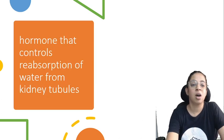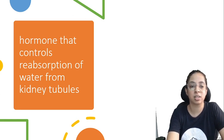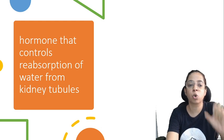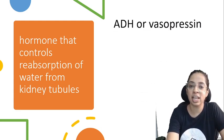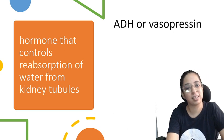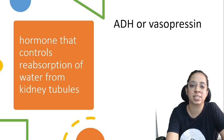Next: the hormone that controls reabsorption of water from kidney tubules. Which is that hormone? ADH or vasopressin — antidiuretic hormone, also known as vasopressin.